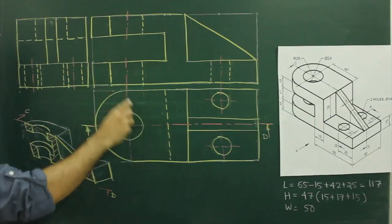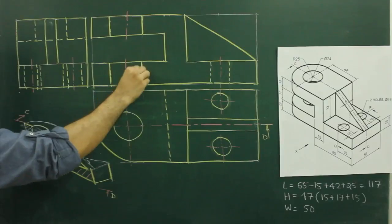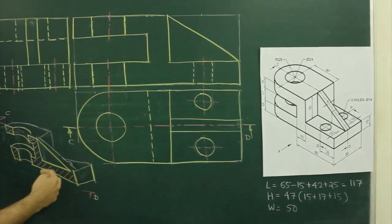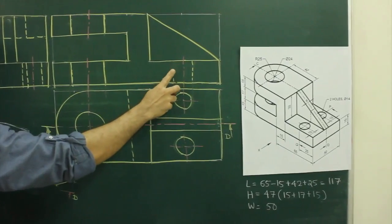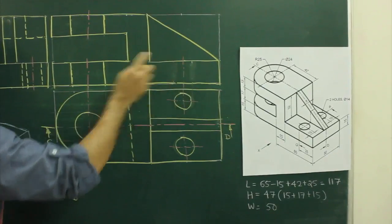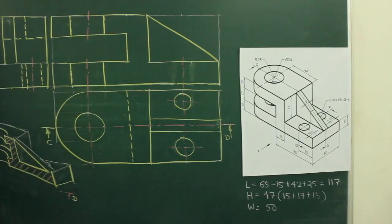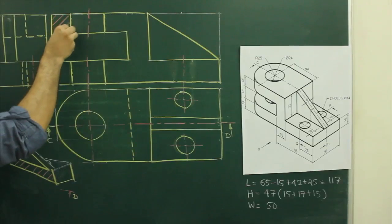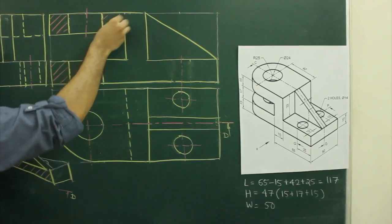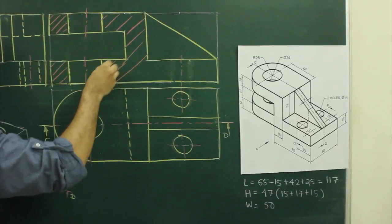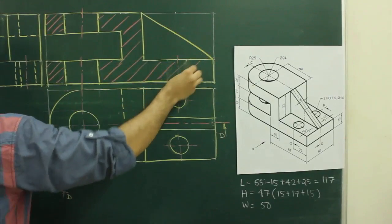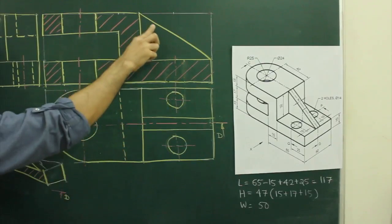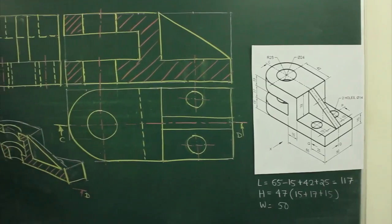First we will draw the cutting plane. These two lines will be dark. Now in this case, when you cut from here, this circular part is behind, so we are not cutting that portion. So we won't be drawing this dotted line. We will draw only a center line to show that there is a circular portion which is behind. We will hatch this part, this part, this part, this part, this section. And over here there won't be any hatching, because we are cutting this rib along the line. So there won't be any hatching over here. So we are done with the sectional front view.